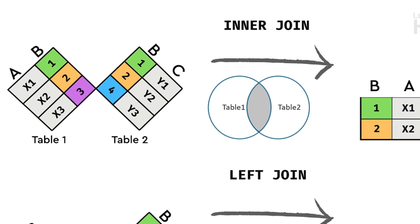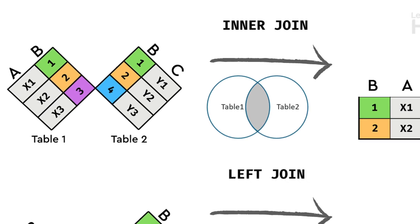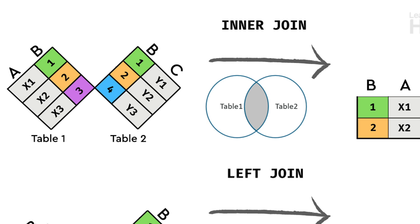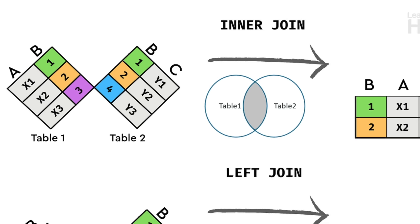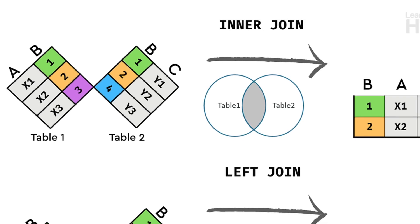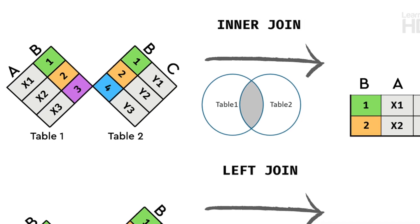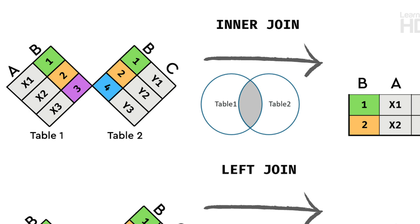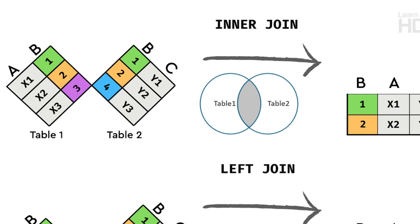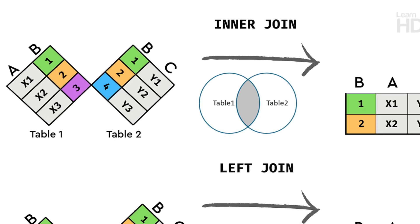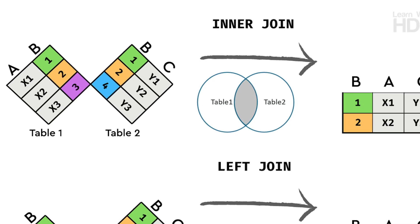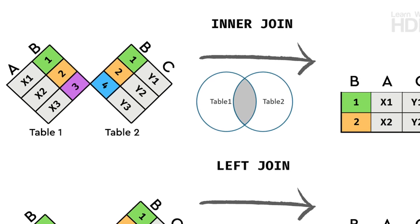In the inner join, table 1 and table 2 — column A matches and the matched data is added. The matching column between table 1 and table 2 is used to match the records.